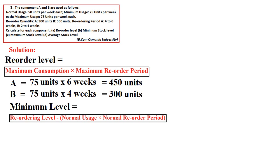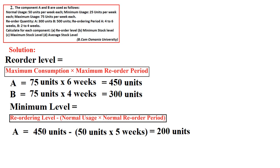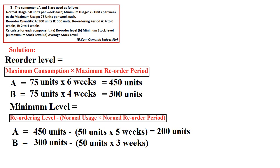For minimum level — formula: reorder level minus normal consumption multiplied by normal reorder period. For A: 450 − (50 × 5) = 200 units. The normal reorder period for A is (4 + 6) ÷ 2 = 5 weeks. For B: 300 − (50 × 3) = 150 units. The normal reorder period for B is (2 + 4) ÷ 2 = 3 weeks.